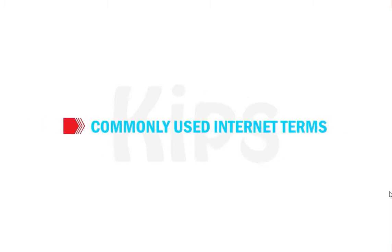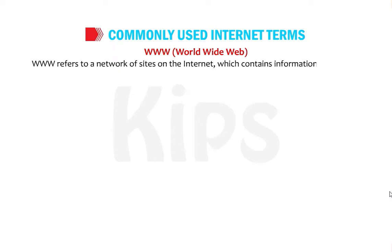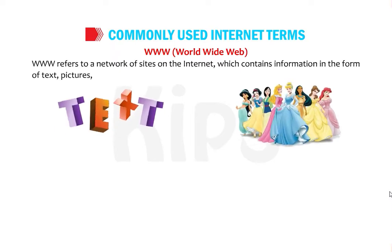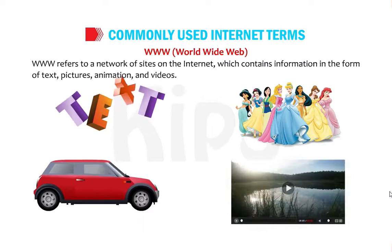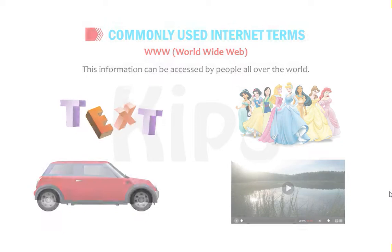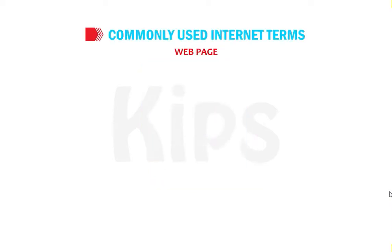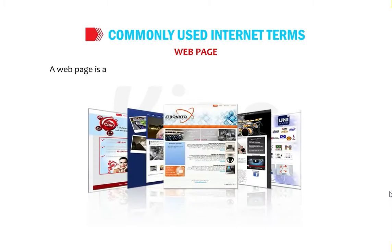Let us talk about commonly used internet terms. WWW — World Wide Web — refers to a network of sites on the internet which contains information in the form of text, pictures, animation, and videos. This information can be accessed by people all over the world. Tim Berners-Lee is the founder of the World Wide Web. A web page is a digital page which may contain text, images, videos, audios, etc.